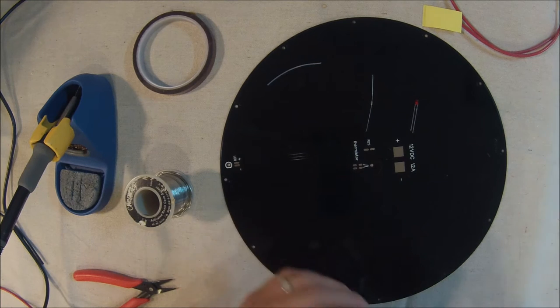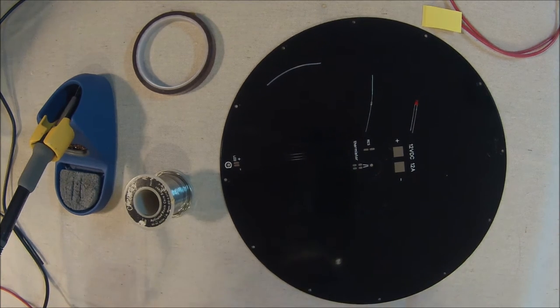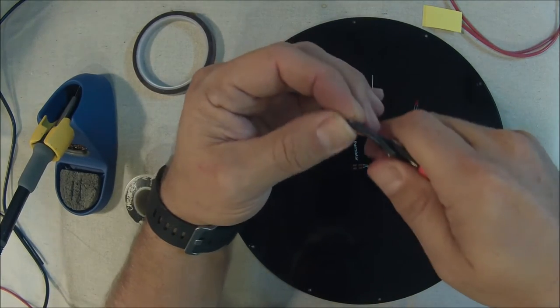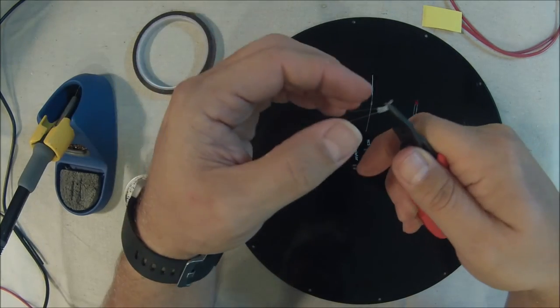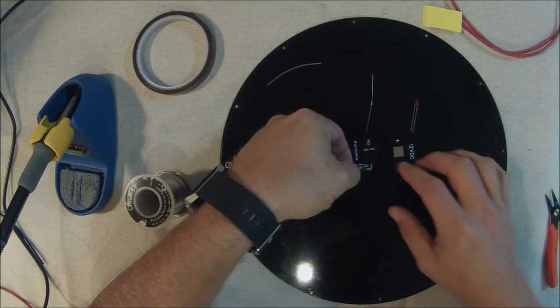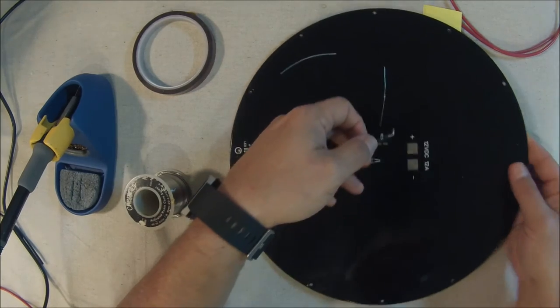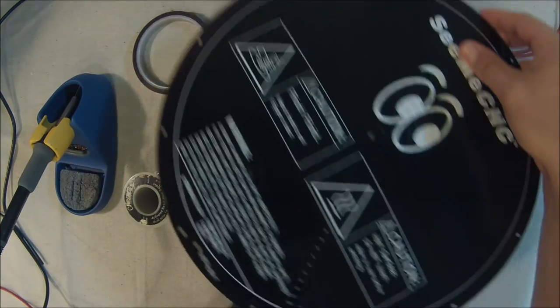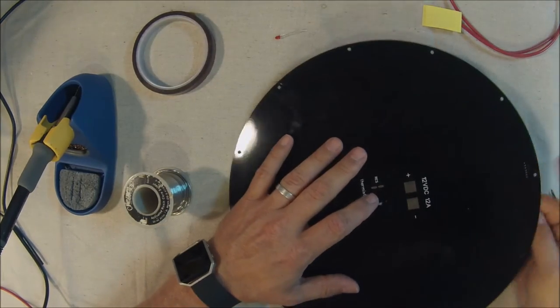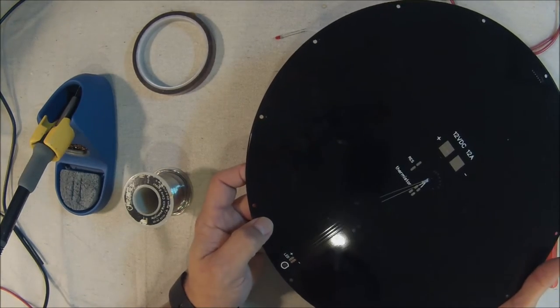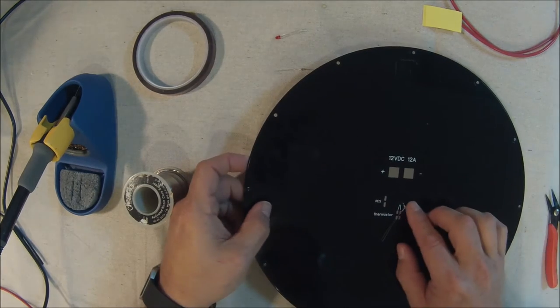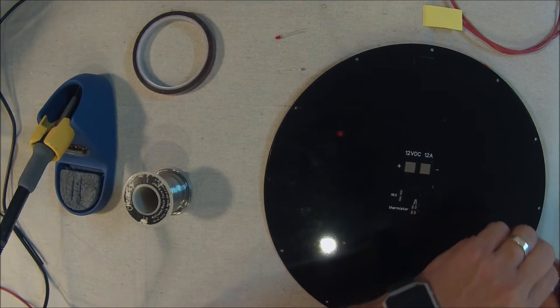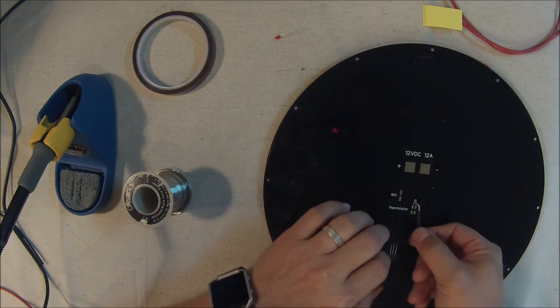Now we're going to take our trusty needle nose pliers and grab that thing right behind the head, and we're going to bend it. The idea is that bend is going to keep the thermistor in the hole. You can see it pokes through quite a ways, and that's okay because we're going to tape it down. For now I'm going to put my pliers under there to give the board just a little bit of lift so I can get this taken care of.